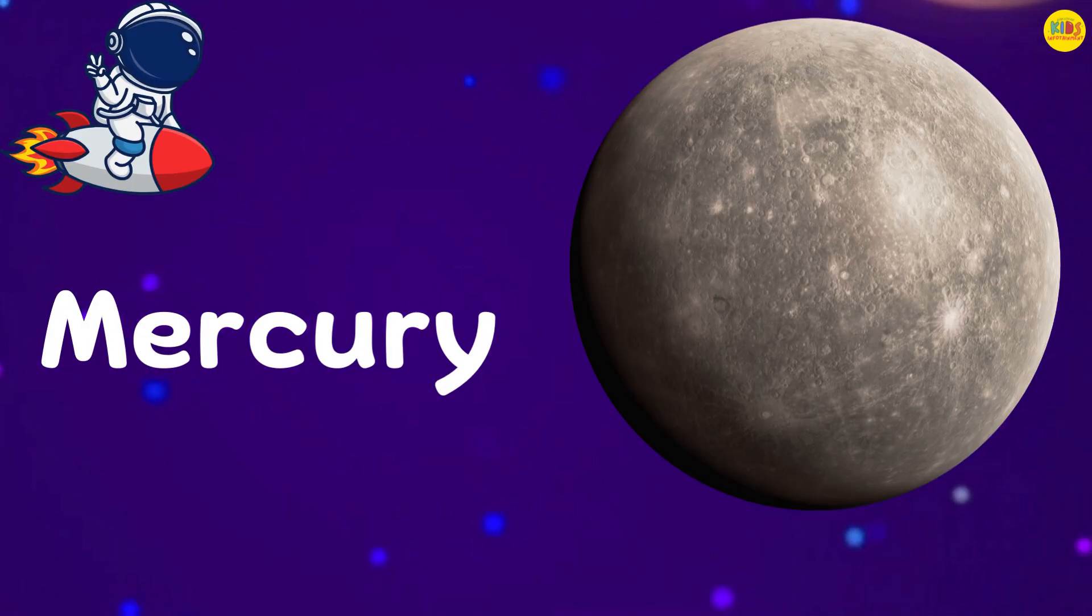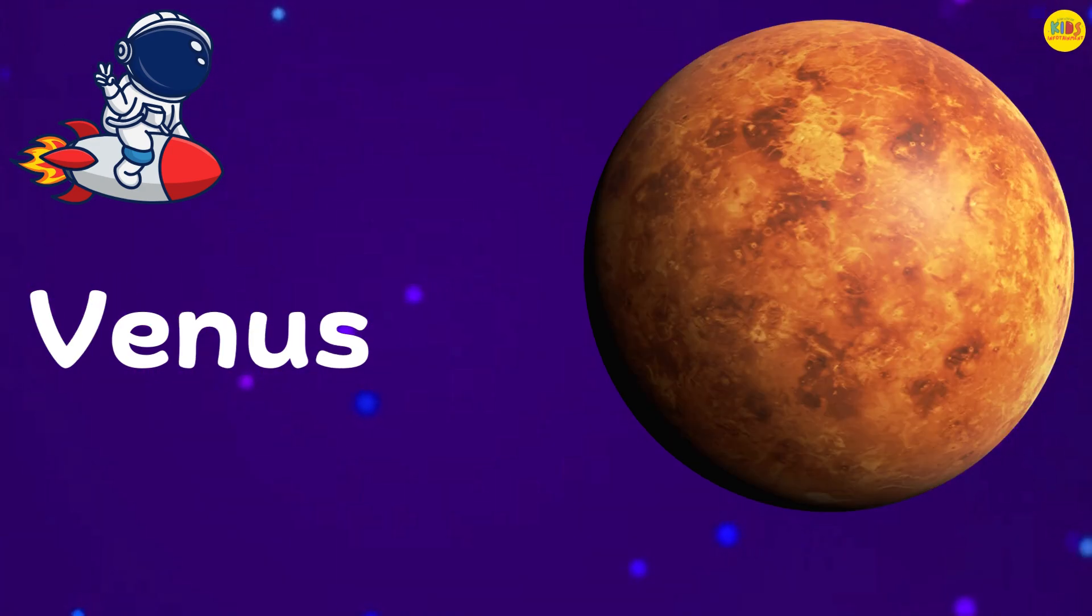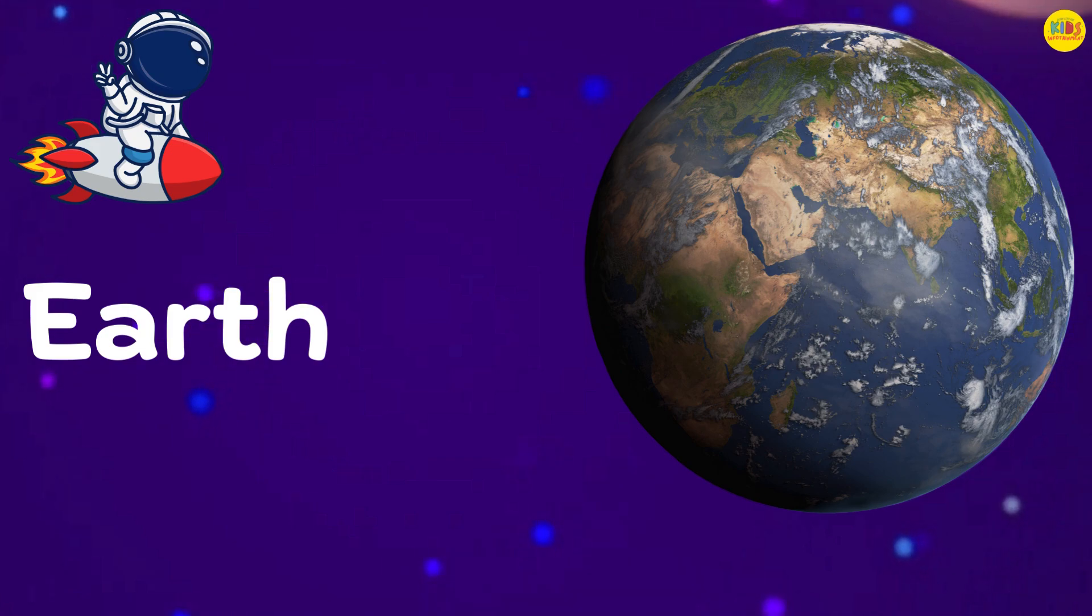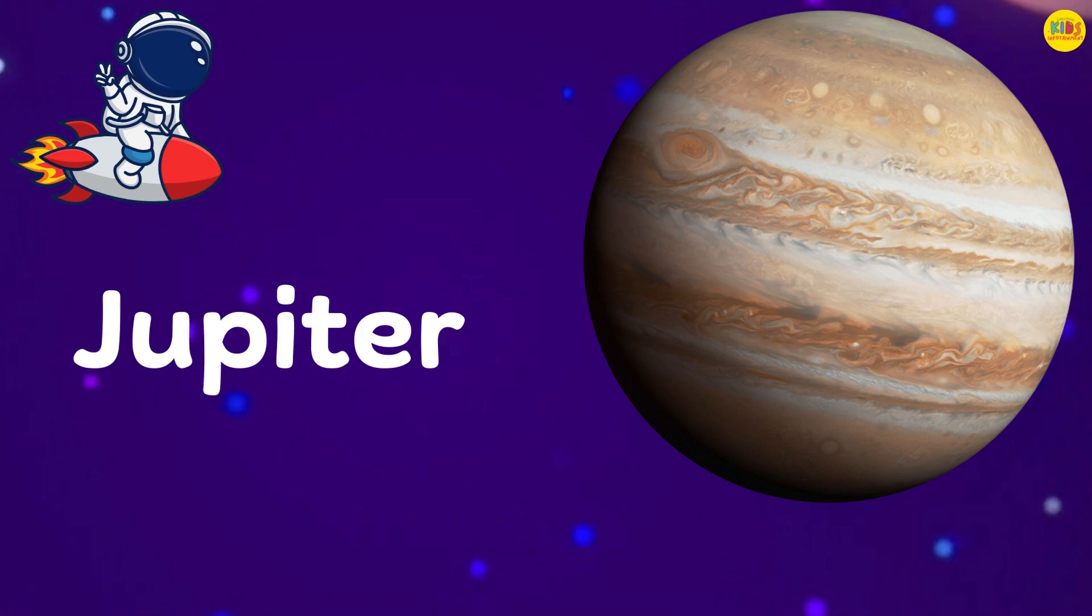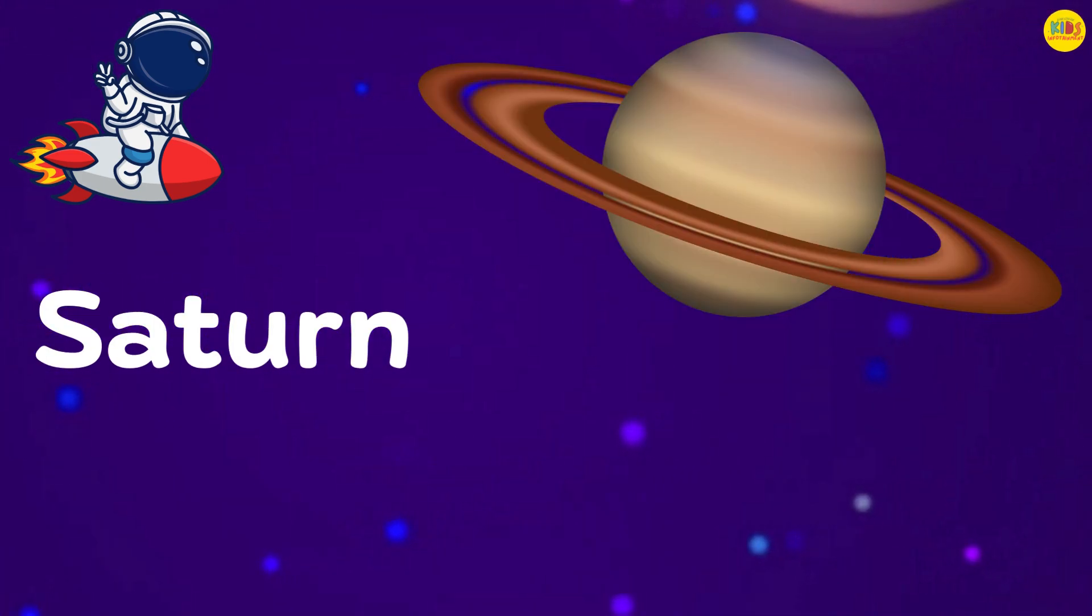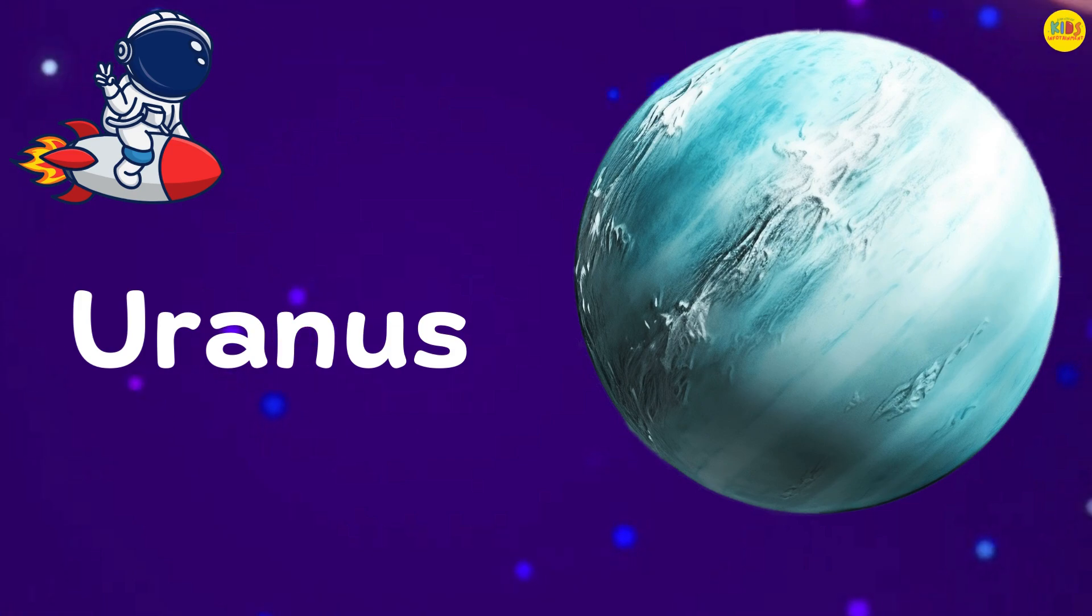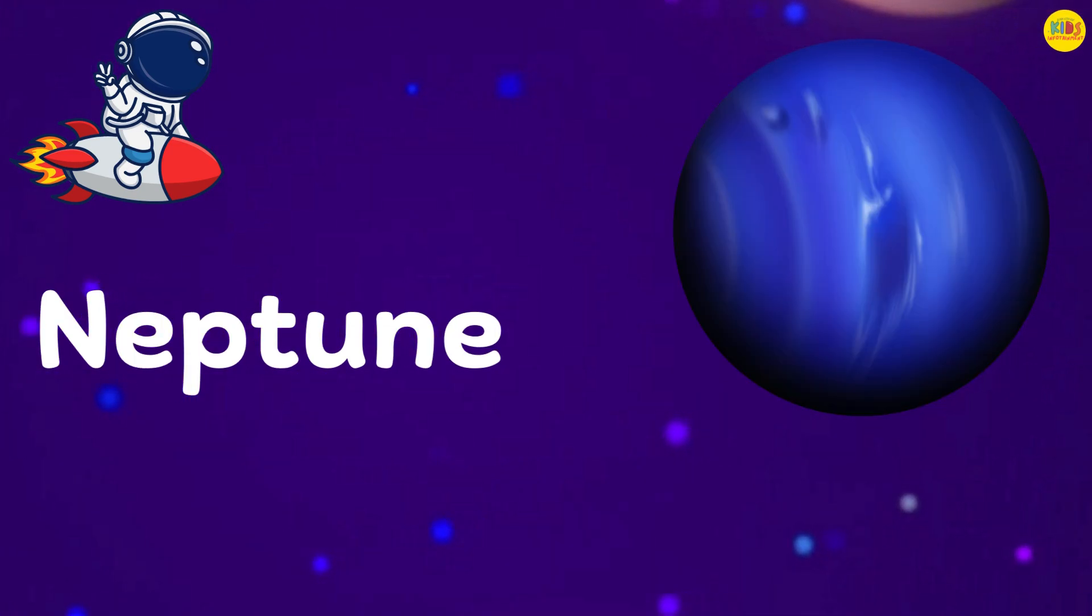We visited Mercury, the speedy, small planet. Venus, the hottest planet. Earth, our home. Mars, the red planet. Jupiter, the giant with a big storm. Saturn, with its amazing rings. Uranus, the sideways spinner. Neptune, the windy, blue planet.